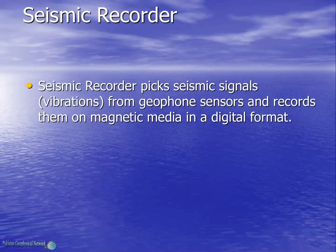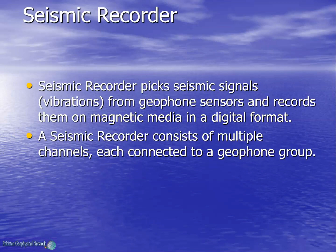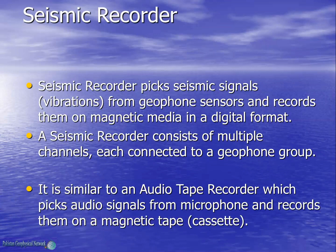The seismic recorder picks seismic signals — that is, vibrations from geophone sensors — and records them on magnetic media in a digital format. It consists of multiple channels, each connected to a geophone group. Its working is similar to an audio tape recorder, which picks audio signals from a microphone and records them on a magnetic tape.